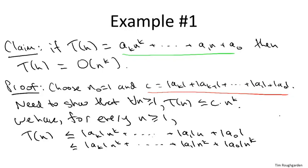And now you'll notice, by our choice of C underlined in red, this is exactly equal to C times n^k. And that's what we had to prove. We had to prove that T(n) is at most C times n^k, given our choice of C for every n at least one, and we just proved that. End of proof.